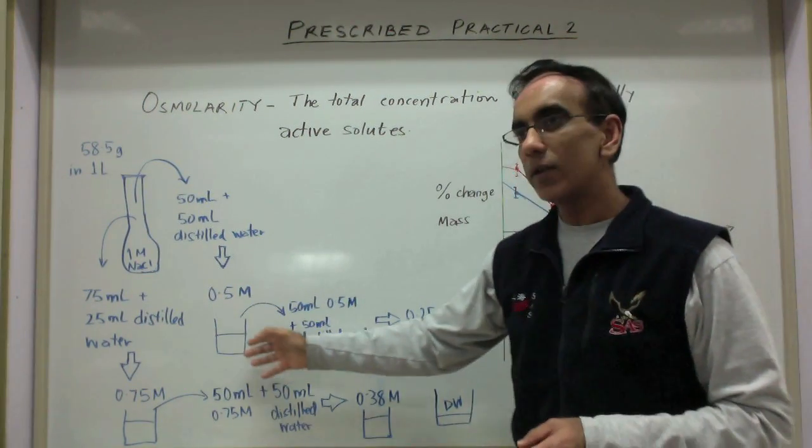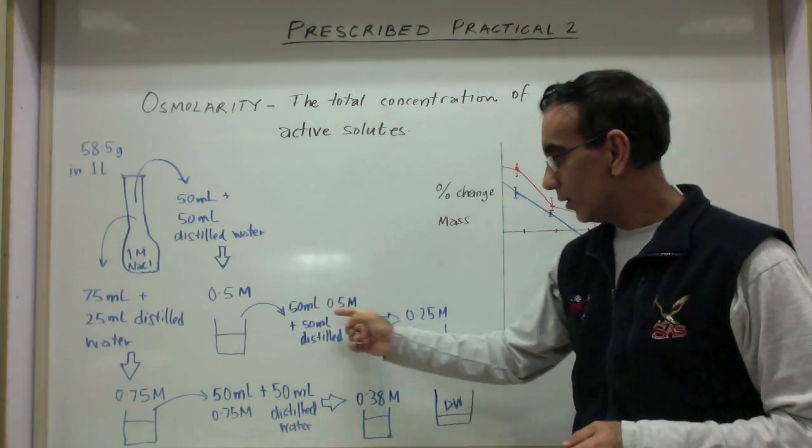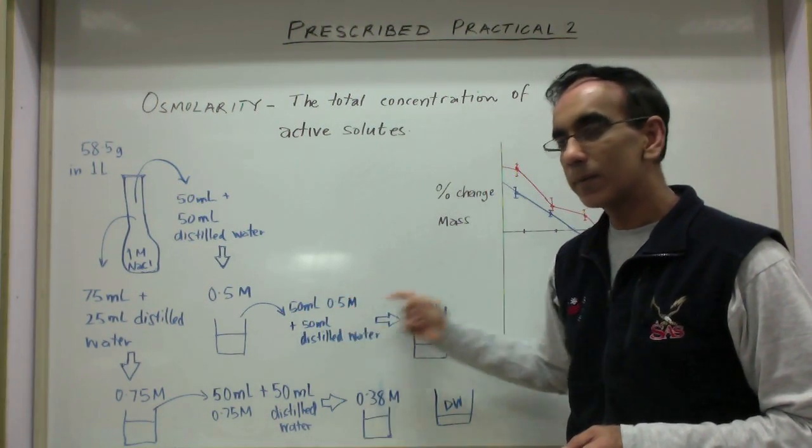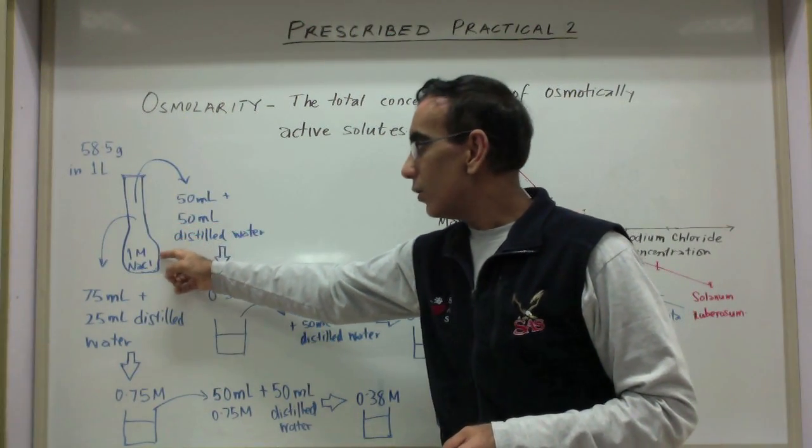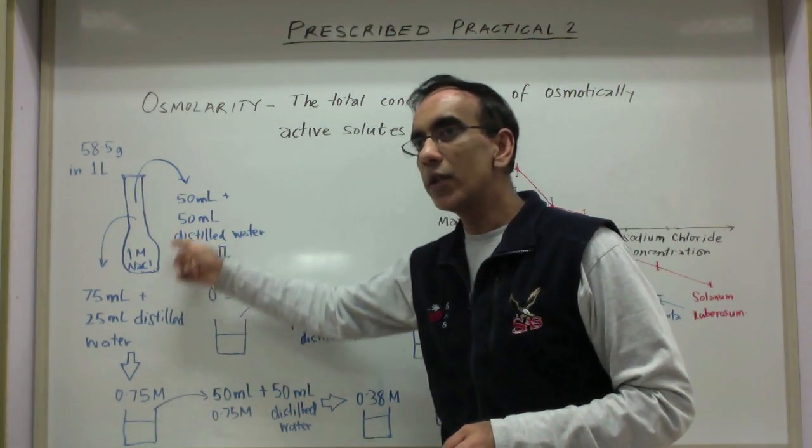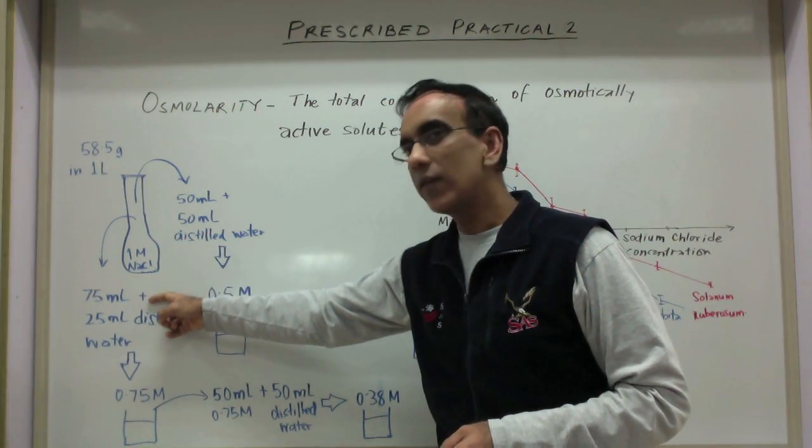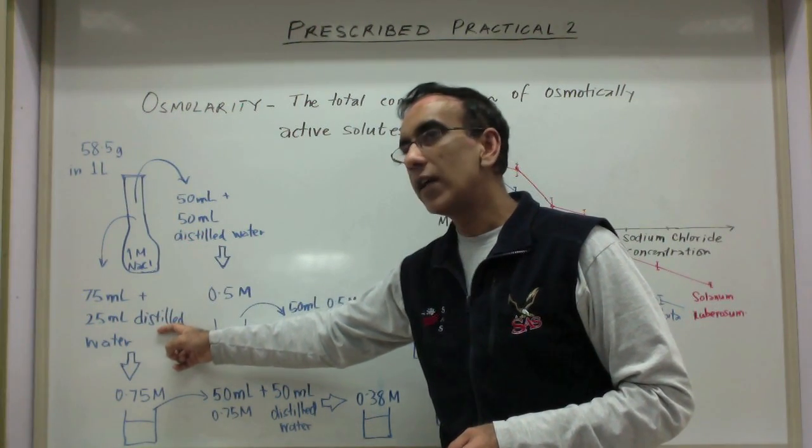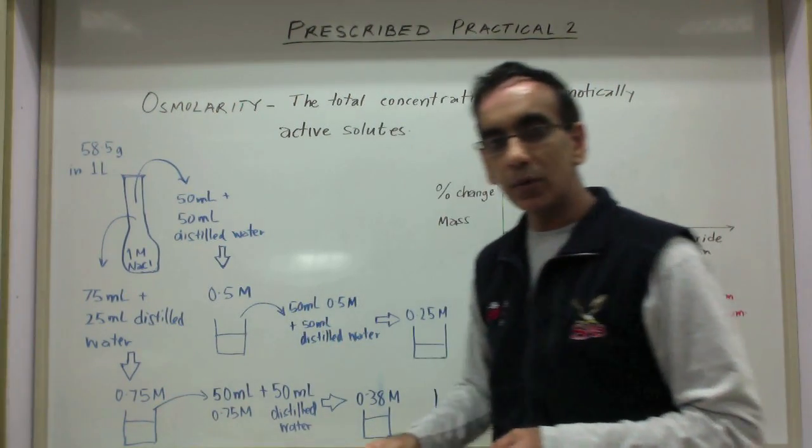A similar procedure would take the series over to a 0.25 molar solution with a 50-50 dilution. To make a 0.75 molar solution you do a 75-25 ratio that gives you a 0.75 molar solution.